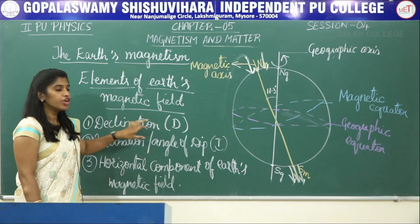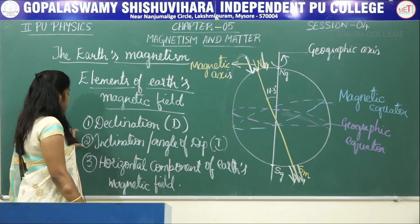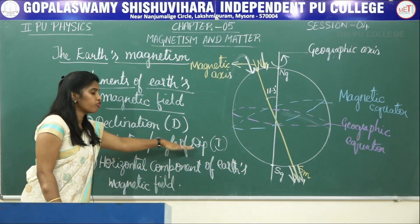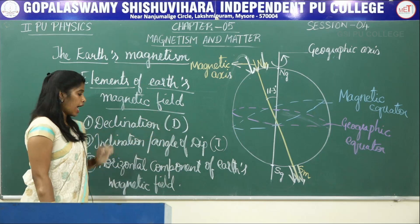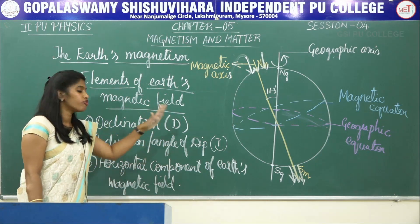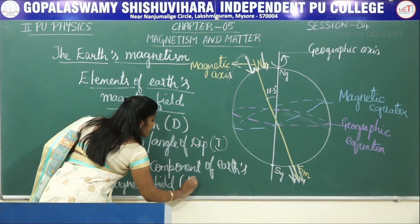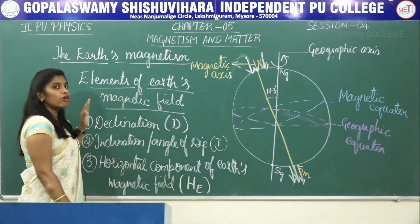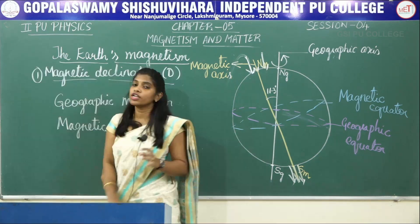The elements of earth's magnetic field are: first, declination, denoted by the letter D; second, inclination — also called angle of dip — denoted by the letter I; and third, the horizontal component of earth's magnetic field, denoted by HE. Let us see all these elements one by one.